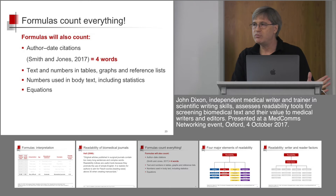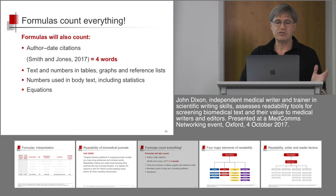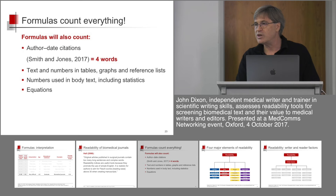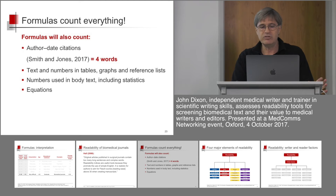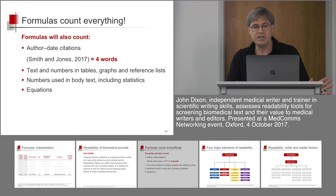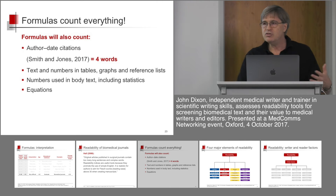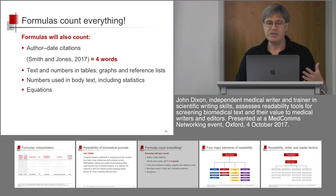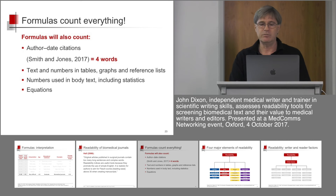Remember that formulas count everything. When talking about research articles, if you take an author-date citation — Smith & Jones 2017 — there are four words, and that would add four words to the length of a sentence. Formulas also count text and numbers in tables, graphs and reference lists, numbers in body text, statistics and equations. So if you're going to use the formulas in biomedical articles, you actually need to remove these elements and just look at the readability of the raw text to get a real idea of readability.